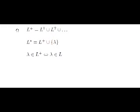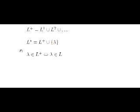The Kleene plus is similar to the Kleene star operation. They differ in the fact that the plus operation does not force inclusion of the empty word. L star is always equal to the union of L plus with the set containing just the empty word. Moreover, lambda belongs to L plus if and only if lambda belongs to L.